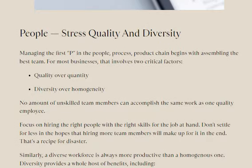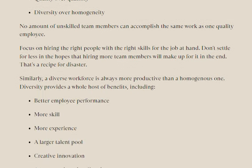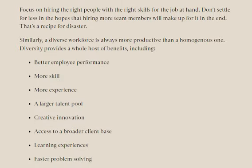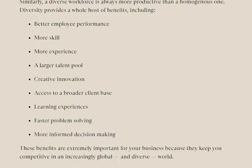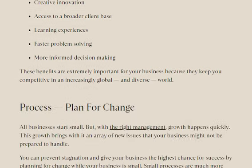So how do you manage people, process, and product? Management of people, the first P in the chain, begins with assembling the best team. For most businesses that involves two critical factors: quality over quantity, and diversity over homogeneity. No amount of unskilled team members can accomplish the same work as one quality employee. Similarly, a diverse workforce is always more productive than a homogeneous one, providing better performance, more skills, more experience, and a larger pool of creative innovation — all of which keep you competitive in an increasingly global and diverse world.